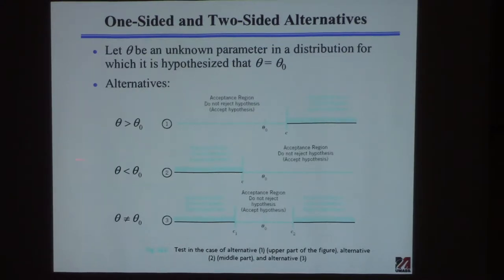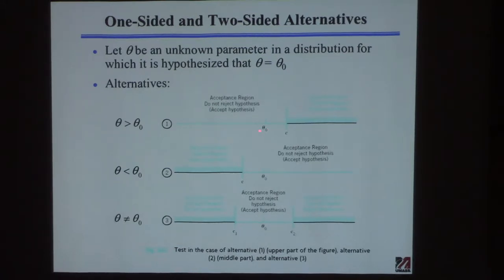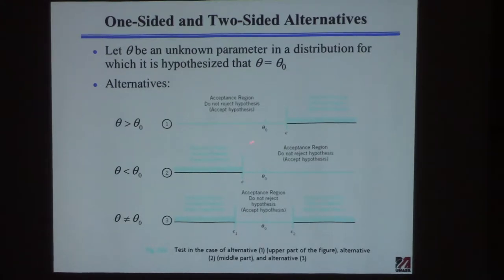This is called a left-sided test. You could do the same thing with a right-sided test. This would be where you're concerned that the mean is actually greater than you've been told or hypothesized. So there's the hypothesized value — if it's less than that, you could care less. If it's a little bit greater, it's okay. But if it gets to be above this critical value C, that's too much, and then you no longer believe that that's the mean. You reject the hypothesis at that point.